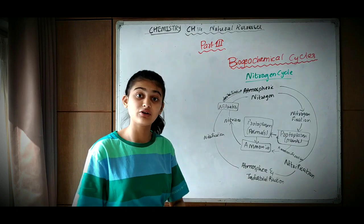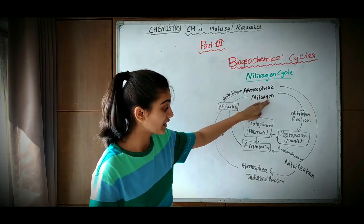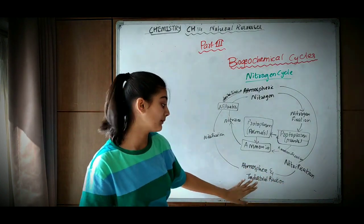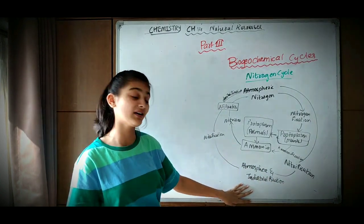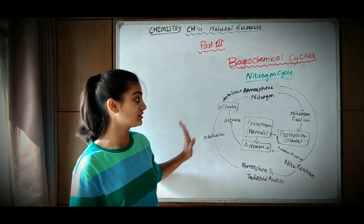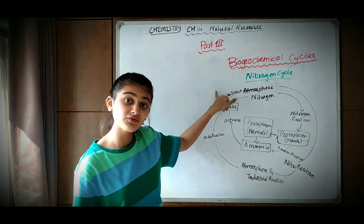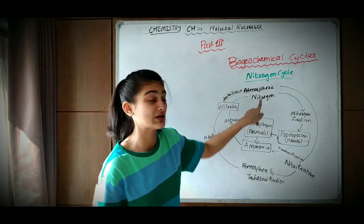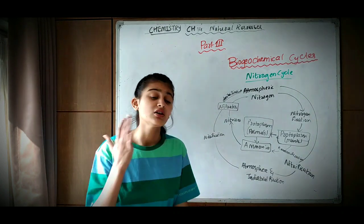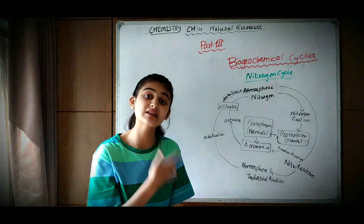This was the second nitrogen cycle. Then atmospheric nitrogen by nitrification and by industriification gets converted into nitrates. And then by denitrification it gets converted back into atmospheric nitrogen. Denitrification is the process of converting nitrates back into atmospheric nitrogen.